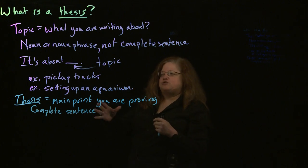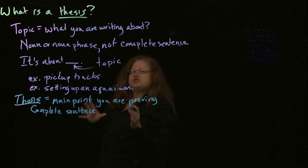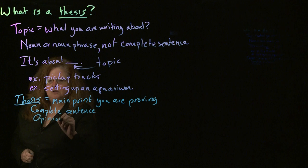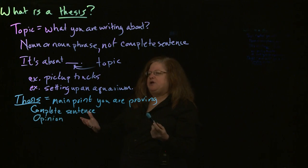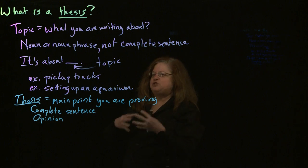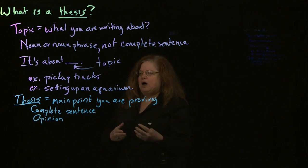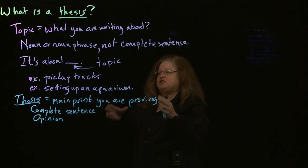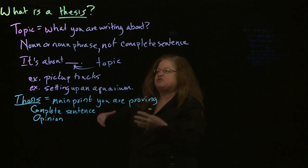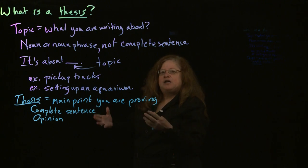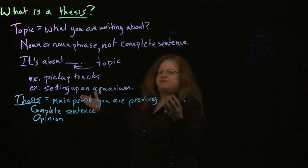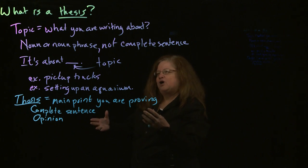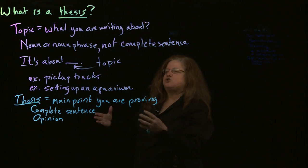Something else about the thesis that you need to remember is it's not going to be just any old complete sentence — it's going to express an opinion. When we're talking about an opinion, we're talking about things that can't be objectively proved. For example, if I were to say the sky is blue, that is a complete sentence, but it's not an opinion because you can go outside and look up at the sky and see whether it's blue. Even if I were to say the sky is orange, I can go outside and look up and see that the sky is in fact not orange. So it's still not an opinion — it's just a false fact.